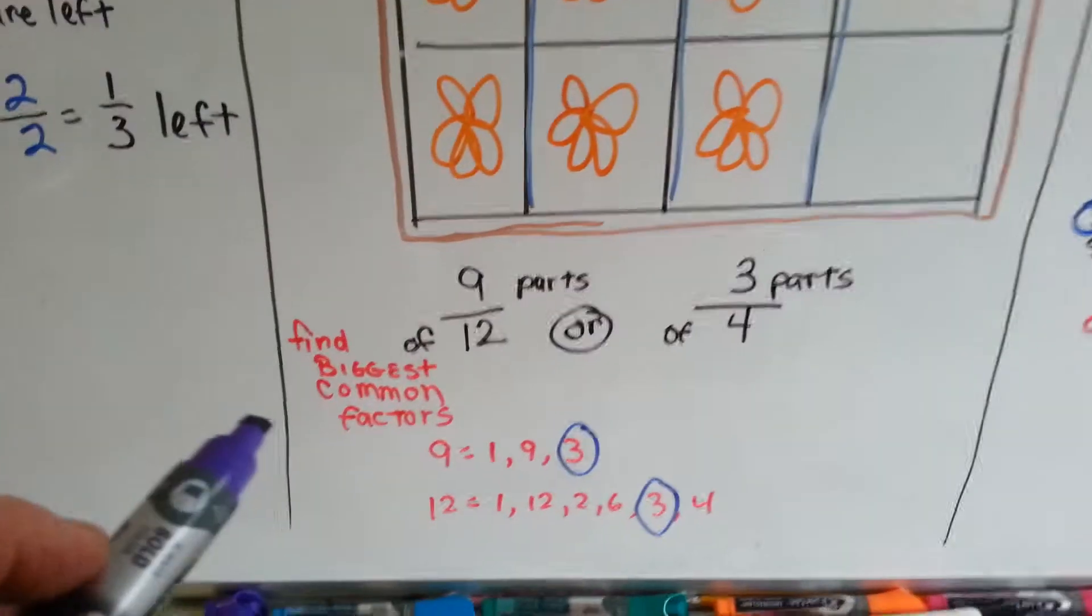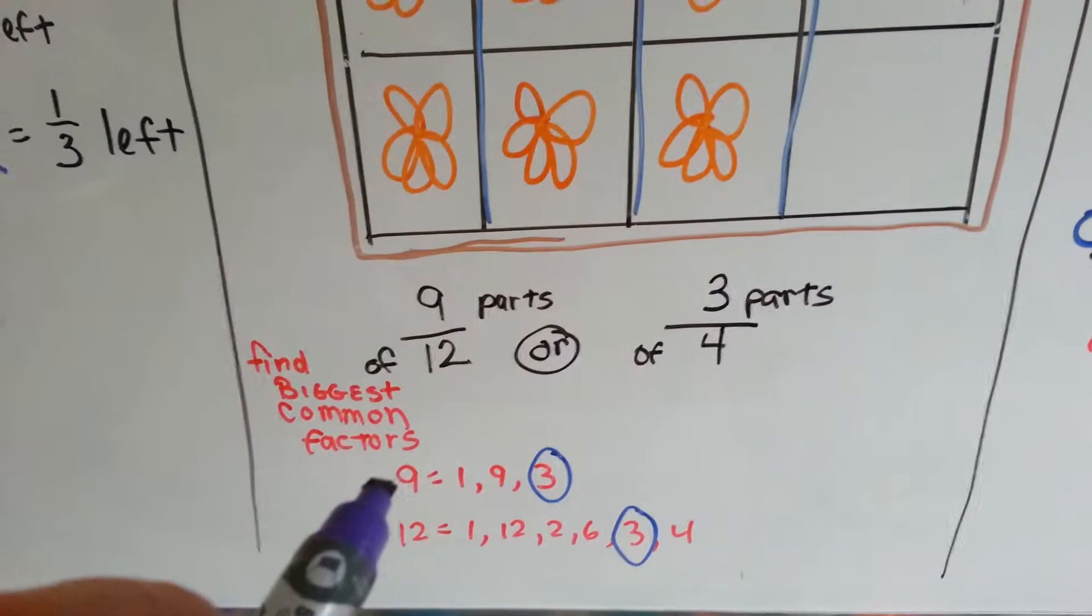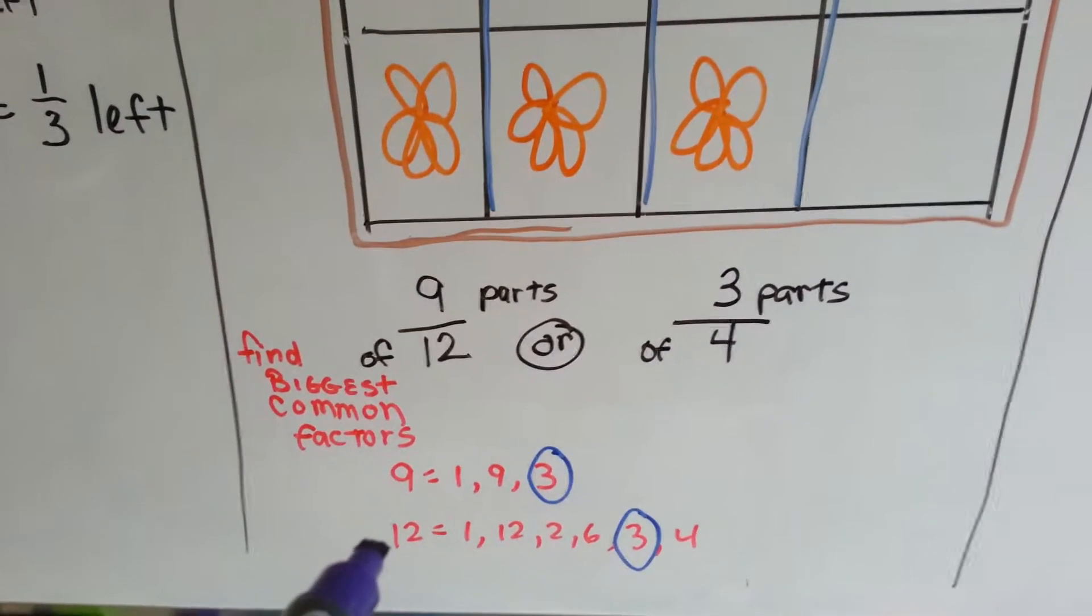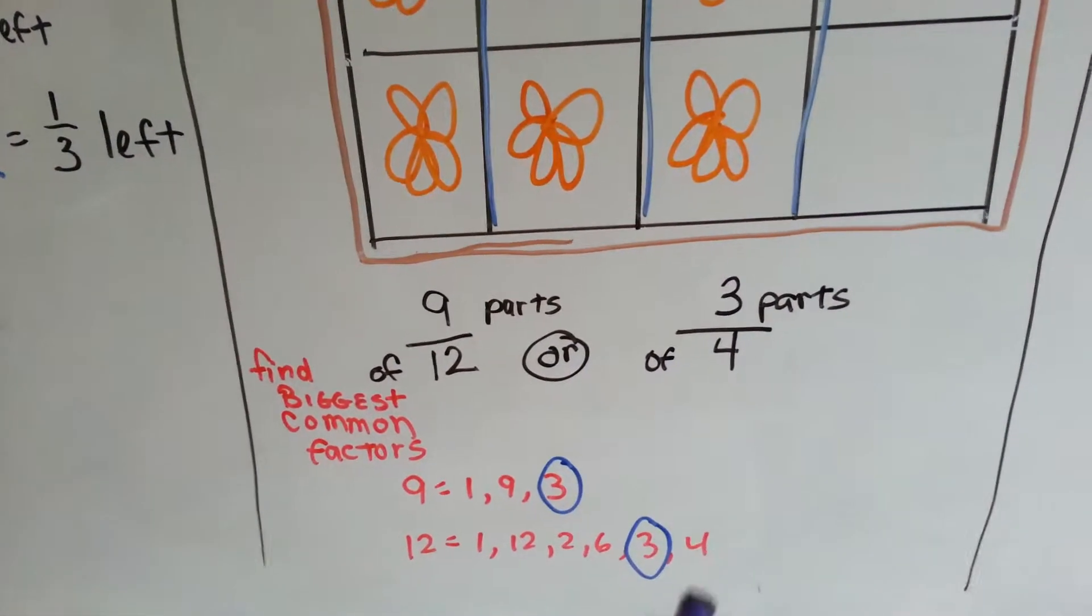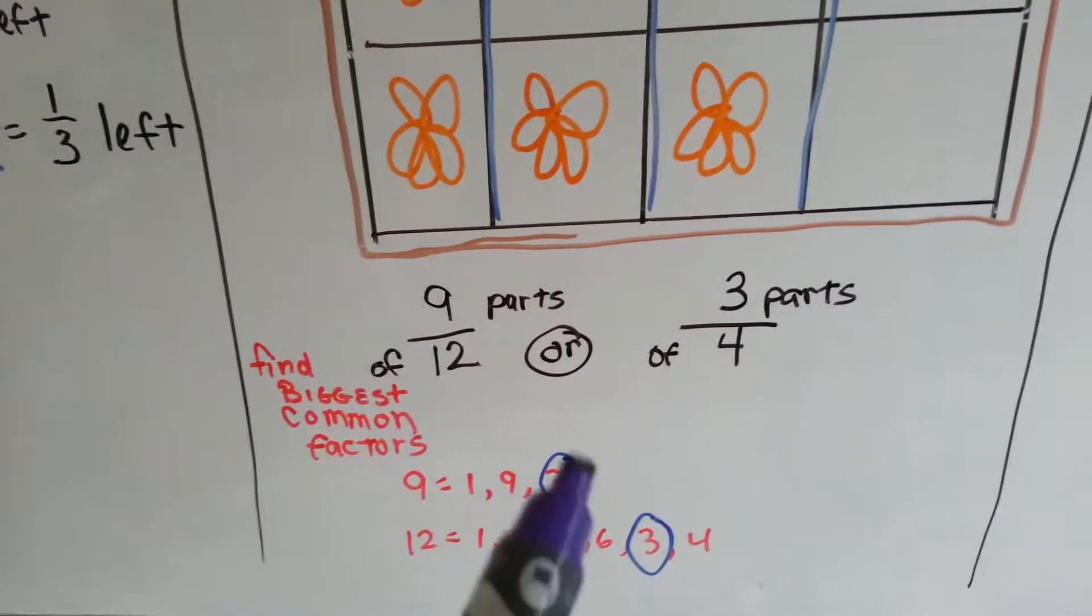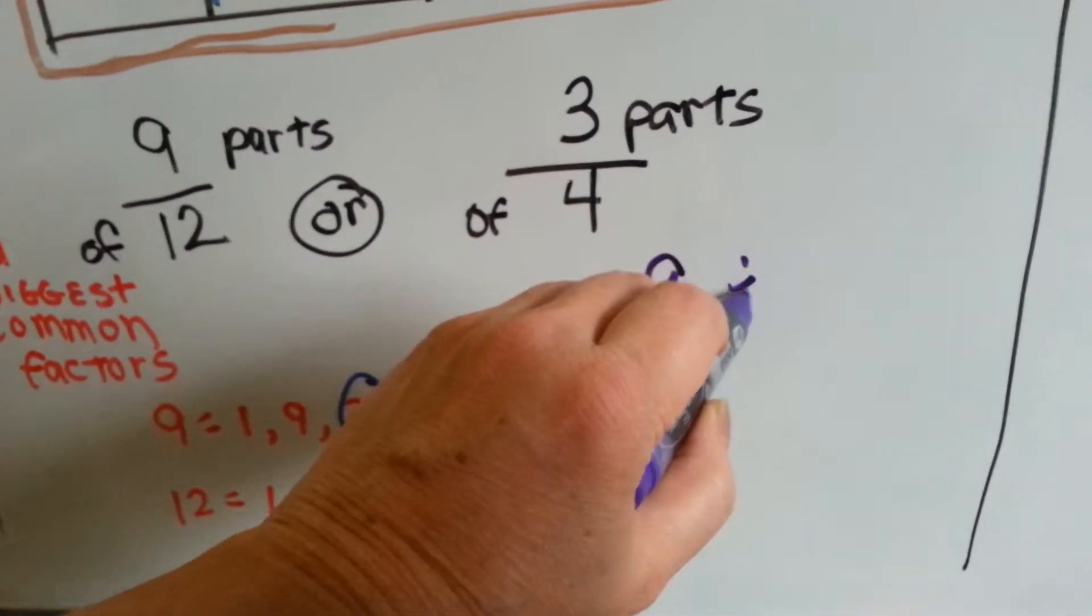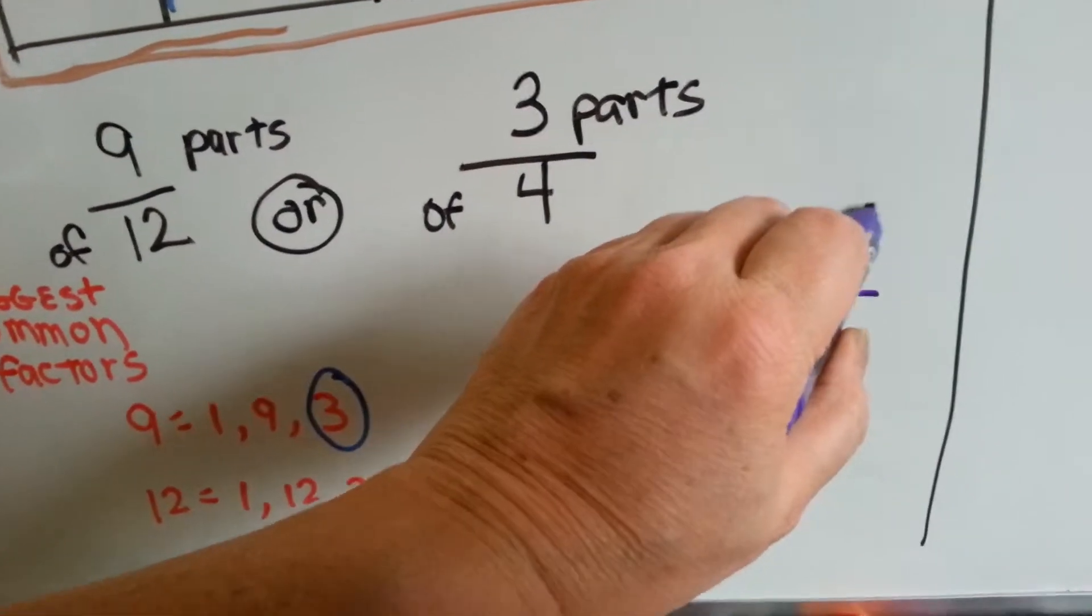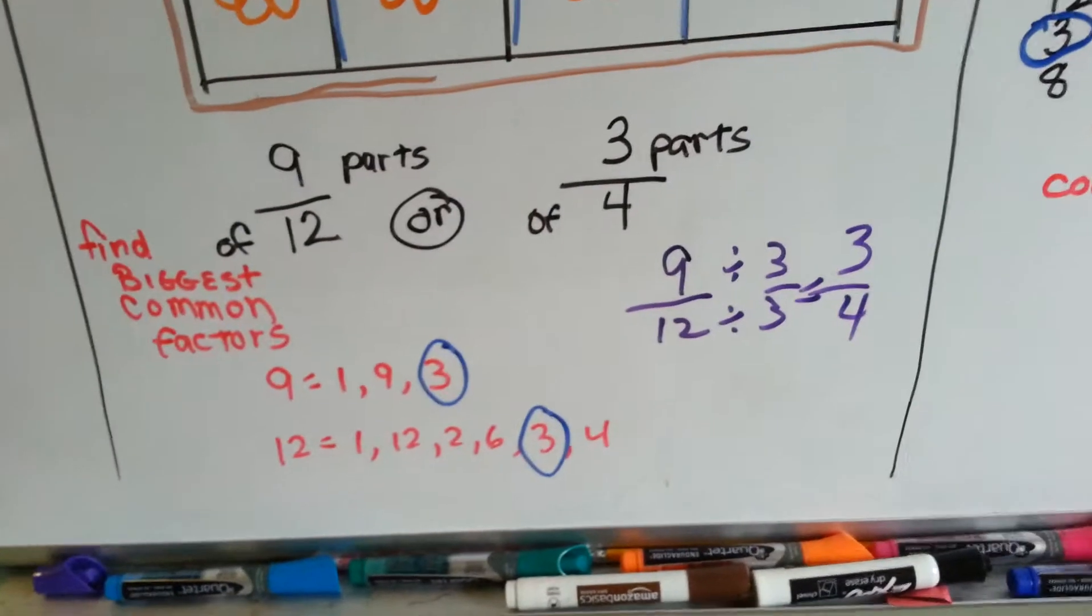The way we can get it by simplifying is we find the biggest common factors. What do we multiply together to get nine? One times nine and three times three. What do we multiply together to get twelve? Well, one times twelve, two times six, and three times four. What do they have in common? They both have a three. So they're going to be divided by three. So the nine twelfths, numerator and denominator, get divided by three. Nine divided by three is three. Twelve divided by three is four. And nine twelfths becomes three fourths.